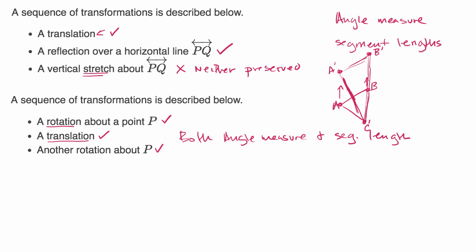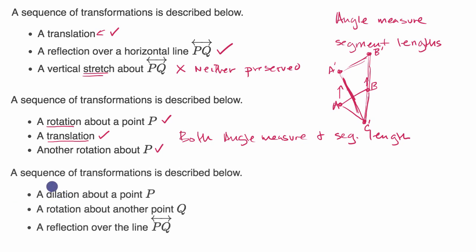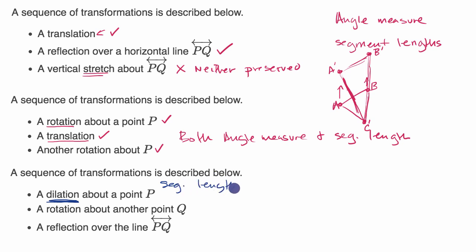Let's do one more example. We have another sequence of transformations — pause this video and see if you can figure out whether angle measures, segment lengths, both, or neither are going to be preserved. The first transformation is a dilation. A dilation is a non-rigid transformation, so segment lengths are not preserved. But in a dilation, angles are preserved.